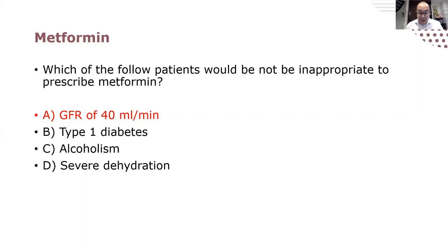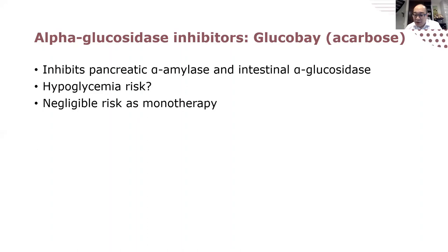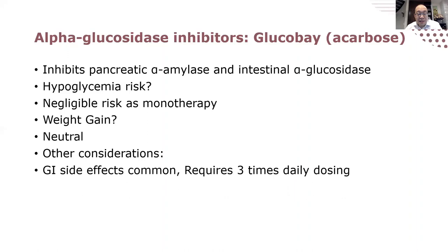Alpha glucosidase inhibitors like acarbose (Glucobay) inhibit enzymes that break down sugars. Hypoglycemia risk is really low, but there's often an exam question about hypoglycemia with acarbose — remember that you need to use pure dextrose or milk lactose to treat hypoglycemia while on acarbose, because Glucobay inhibits the breakdown of sucrose into fructose and glucose. Weight gain is neutral, but GI side effects like excessive gas are quite common. It requires three-times-daily dosing and is overall a weaker but safe drug — I often use it in very frail or elderly patients.